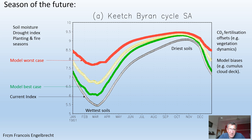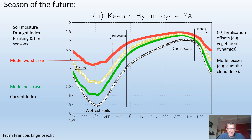In the worst-case scenario, soils are much, much drier. The implication is that the growing season, planting season, and harvesting season will all change. And importantly, the fire season will change if soil moisture changes according to this prediction. Understanding the seasonal cycle of ecosystem parameters and their relationship to climate is really important in understanding the impacts of climate change as expressed through the seasonal cycle.